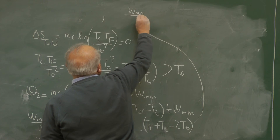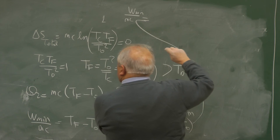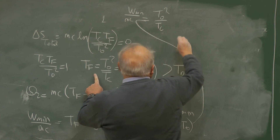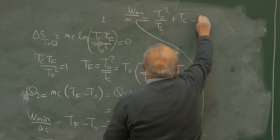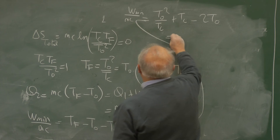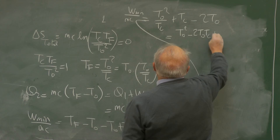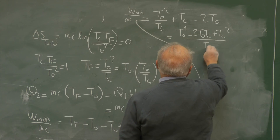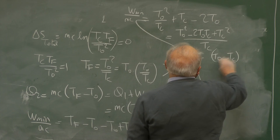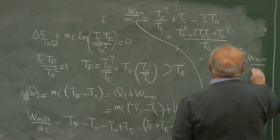W minimum over MC equals Tf plus Tc minus 2T0. Substituting Tf equals T0 squared over Tc, we get T0 squared over Tc plus Tc minus 2T0, which equals (T0 squared minus 2T0·Tc plus Tc squared) over Tc. That equals (T0 minus Tc) squared over Tc. That is W minimum over MC.